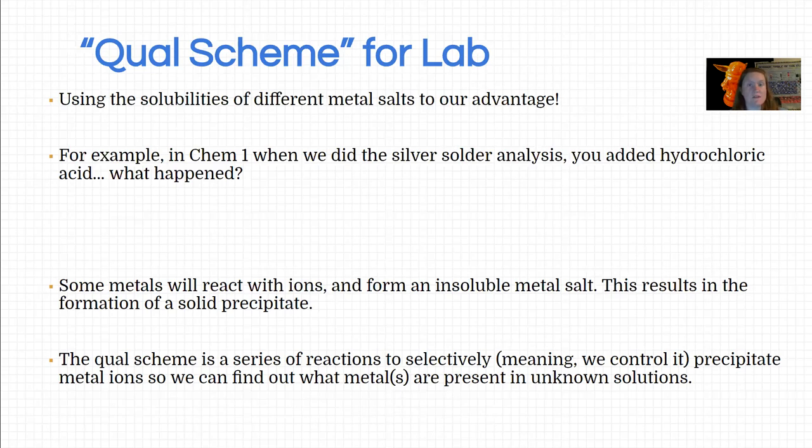When you do chapter nine you're gonna see that when you add chloride in the form of HCl to silver, mercury and lead, it forms a solid. You're gonna see it as kind of a milky cloudiness at first but then you're gonna centrifuge and it will settle down to the bottom and you'll see that it's a solid. That's because essentially AgCl, PbCl2 and Hg2Cl2 are not soluble in water.